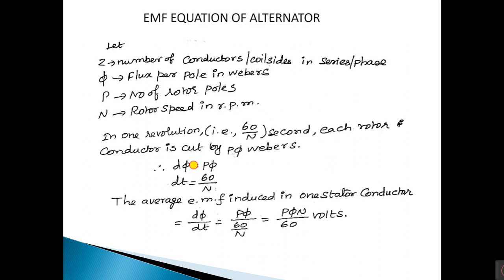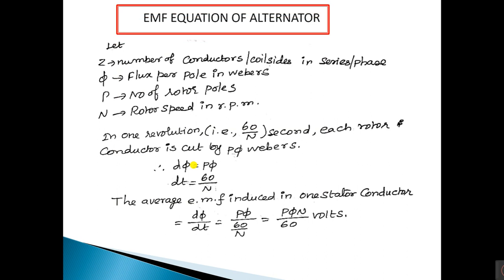Now we will move on to the EMF equation of the alternator, which is very important. Let z be the number of conductors per coil side in series per phase, φ the flux per pole in webers, p the number of rotor poles, and n the rotor speed in rpm.